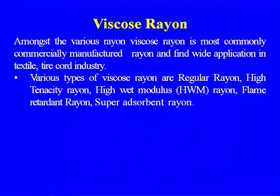Amongst the various rayons, viscose rayon is the most commonly and commercially manufactured rayon and finds wide application in textiles and the tire cord industry. With the coming of petrochemical-based synthetic fibers, more polyester, polypropylene fiber, or nylon is now going to the tire cord industry, but viscose was important before those fibers arrived. The importance of viscose rayon remains both in the woven and non-woven industry.